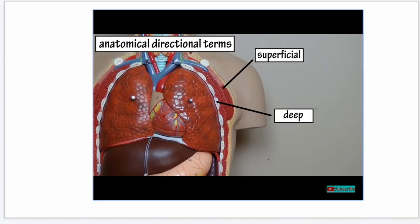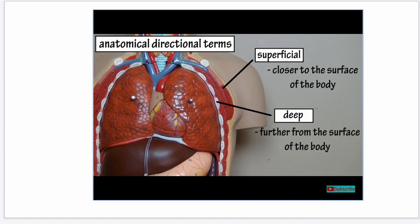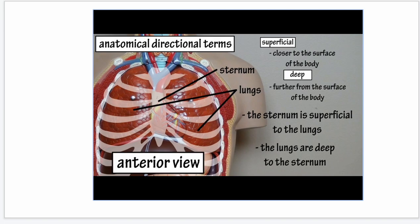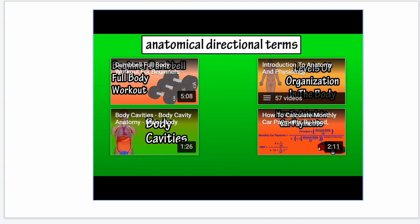Superficial and deep are another set of directional terms. Superficial means closer to the surface of the body, and deep means further away from the surface. We would say the sternum is superficial to the lungs, or the lungs are deep to the sternum. This is the case when looking at the body from the front or anterior view in the anatomical position. And that concludes the anatomical directional terms.